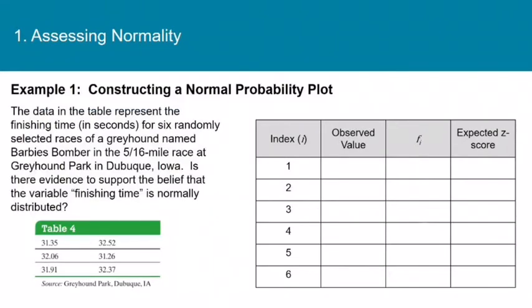Typically we will rely on the calculator to do these normal probability plots for us, but just this one time let me walk through this with you. I don't want you to feel like you have to remember every step. Anytime you have to do one of these you'll be able to do it on the calculator, but I would like for you to at least once see what the calculator is doing. In this example, the data in the table represent the finishing time in seconds for six randomly selected races of a greyhound named Barbie's Bomber at Greyhound Park in Dubuque, Iowa. Is there evidence to support the belief that the variable finishing time is normally distributed?